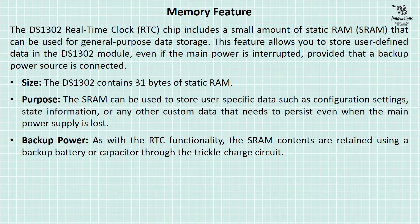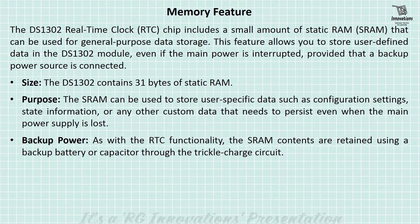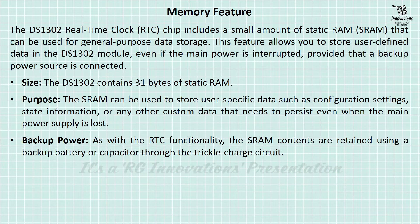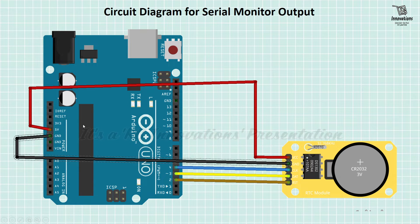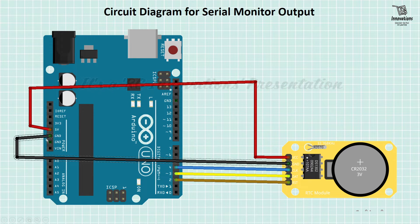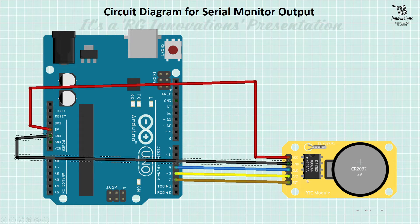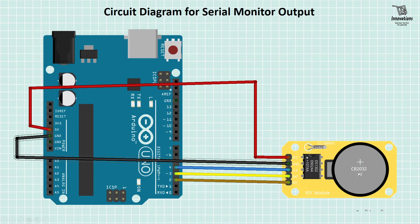Now we will see practical examples of how to use the DS1302 module to get the time and date using an Arduino — one with serial monitor output and another with LCD screen output. This is the circuit diagram for serial monitor output. The connection is simple: 5V connects to the VCC pin, ground to the ground pin, the clock pin to Arduino pin 4, the data pin to pin 3, the reset pin to pin 2, and we connect a CR2032 battery for backup power.